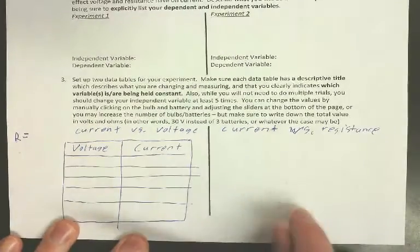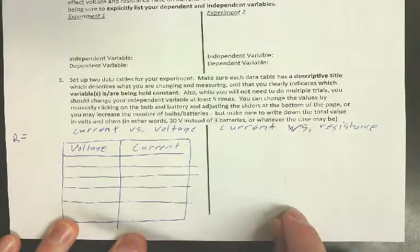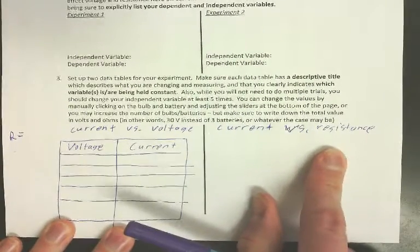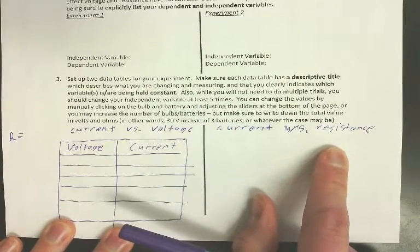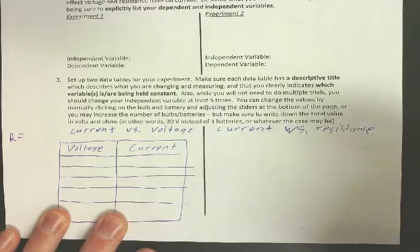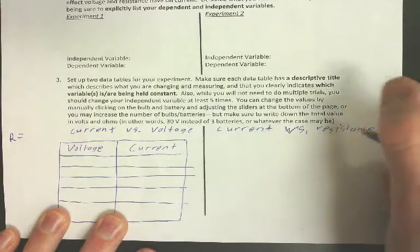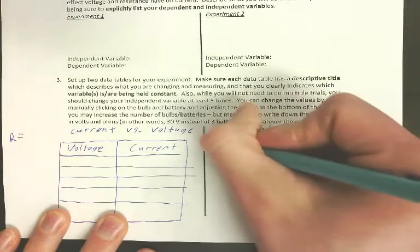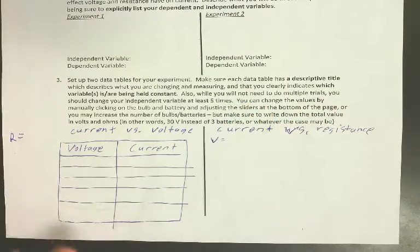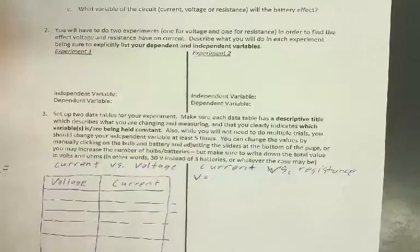For the other experiment, you're going to do the exact same thing, but this time you're going to change the resistance and measure the current. You need to tell me what the voltage is going to be, because that's going to be held constant while you change the resistance. Go ahead and answer one and two.